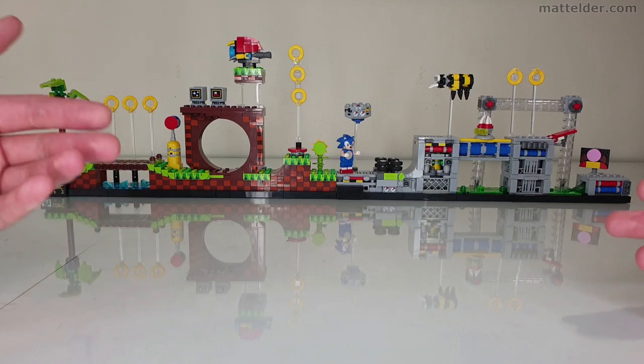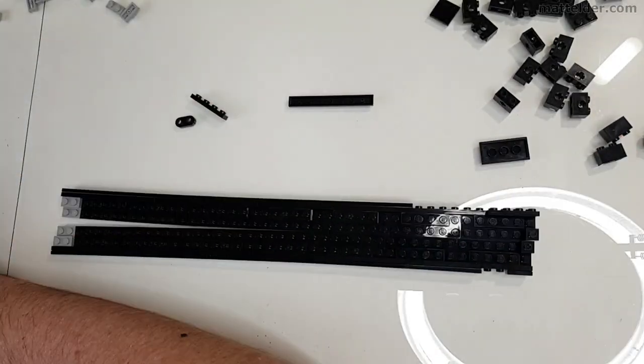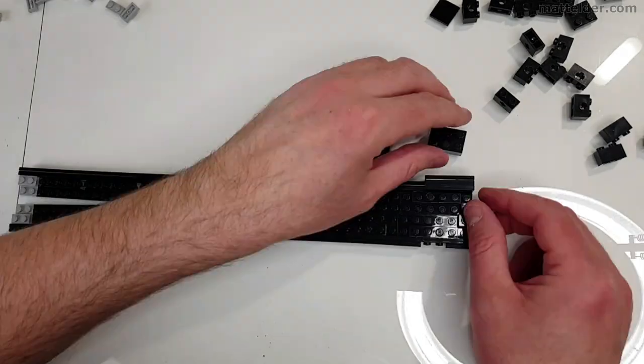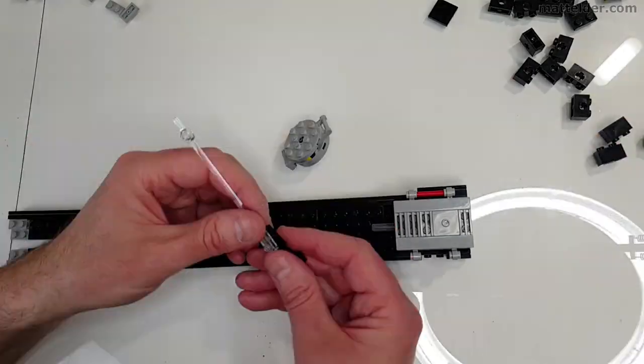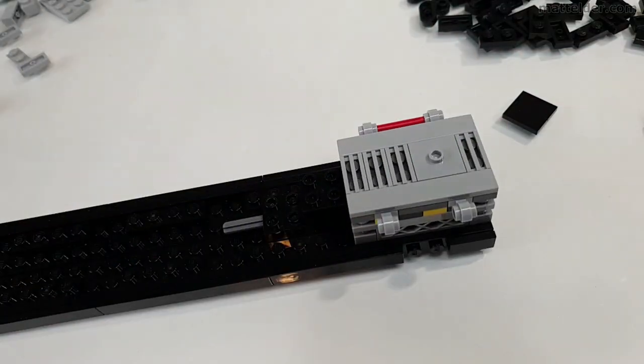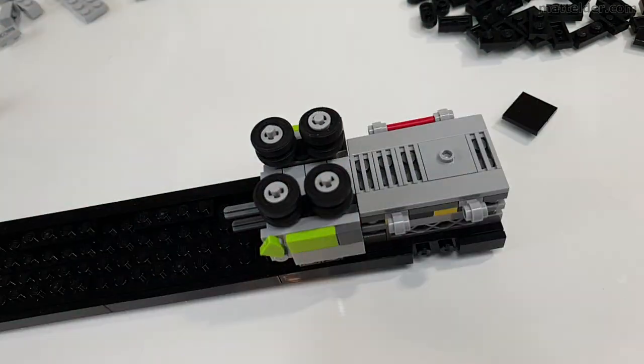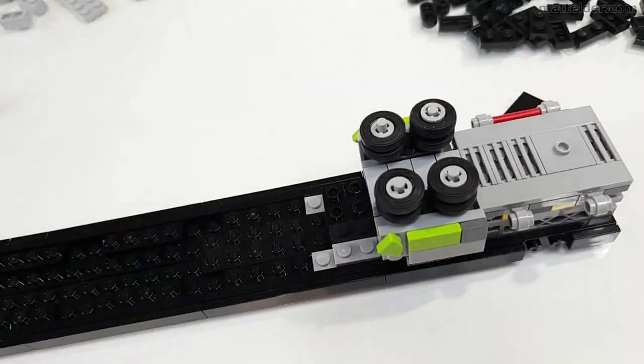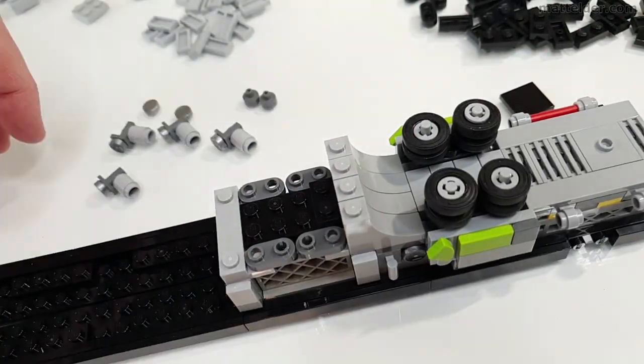So start off by creating the long base and then going through and building each module on top of that. And you can see some of the axles there starting to go in which can get a little bit tricky because then you've got to pull it up and angle it.